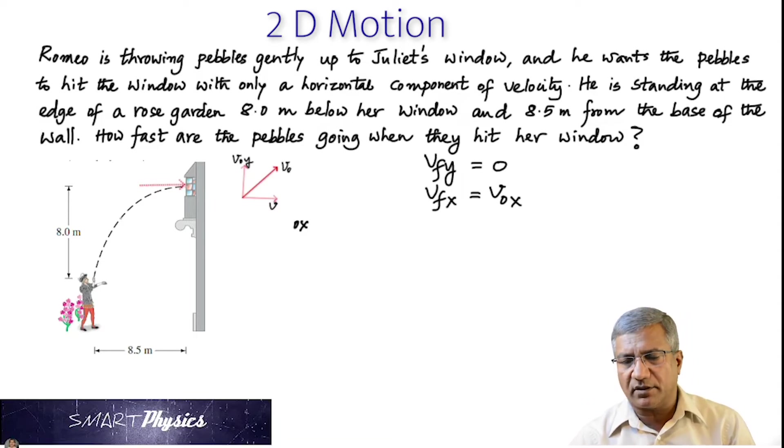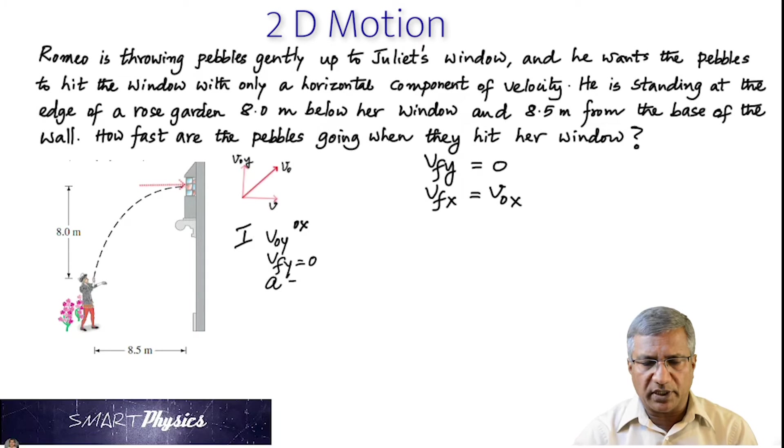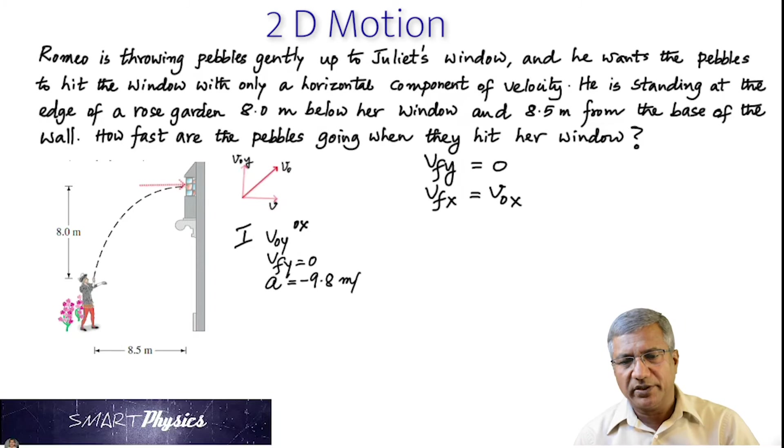So first, let's consider the Y quantities. I'll do this in three steps. Step number one, we know that the initial Y velocity is V0Y. We do not know its value, but we know the final Y velocity is 0. And then the acceleration is negative 9.8 meter per second squared. That's the acceleration.